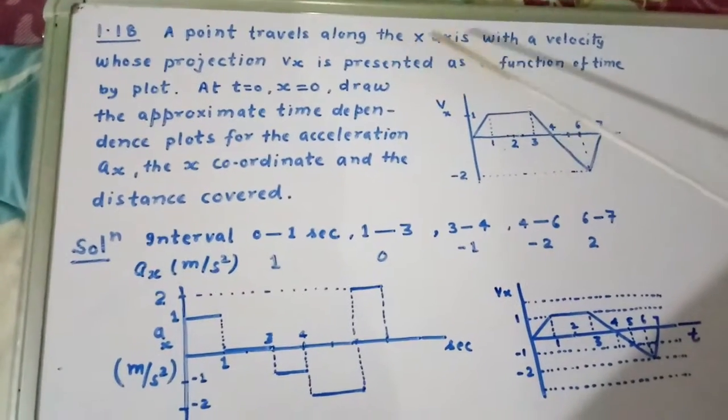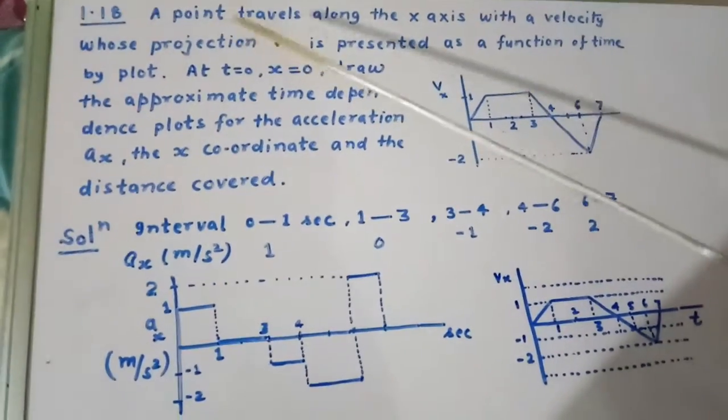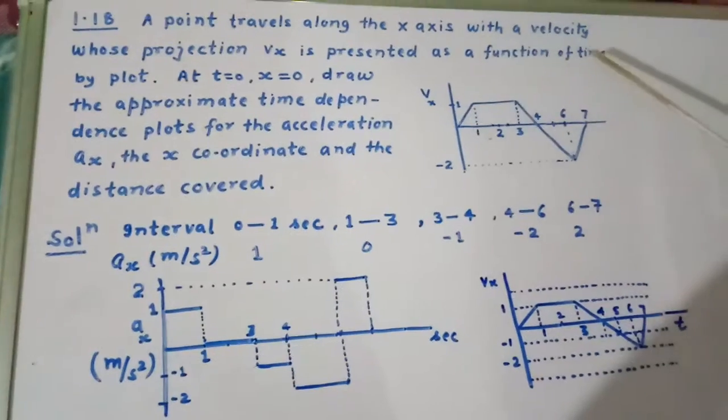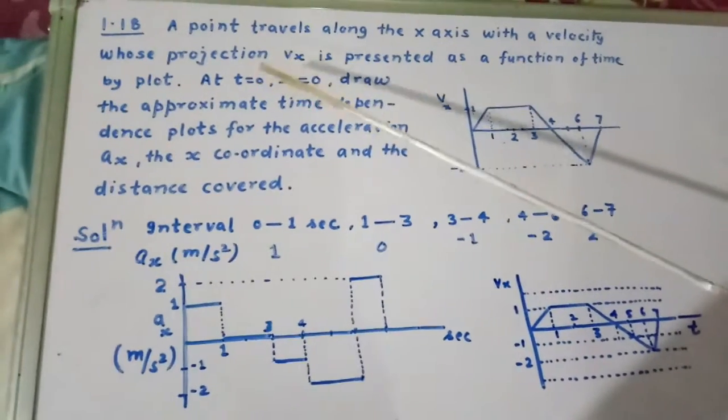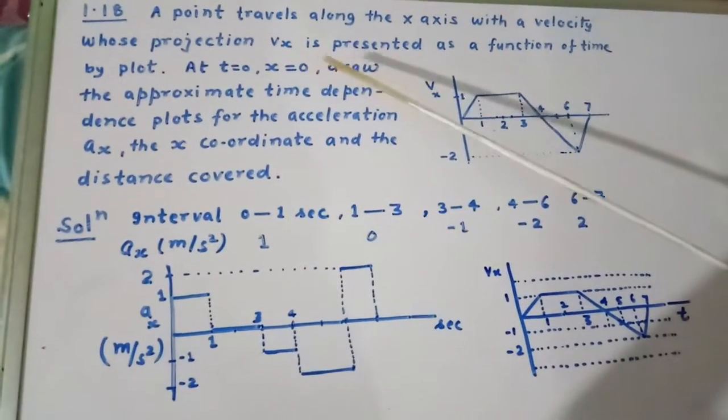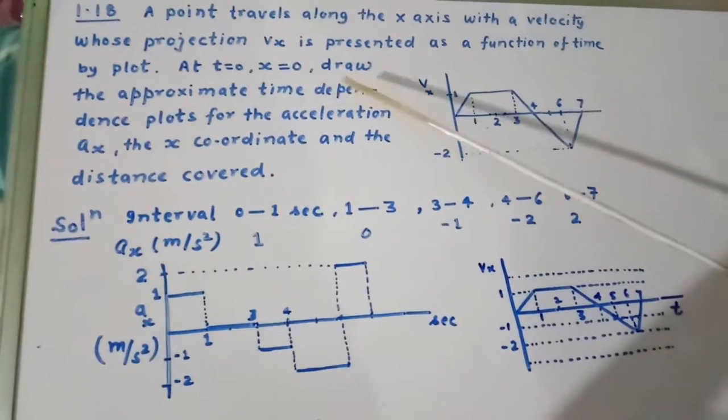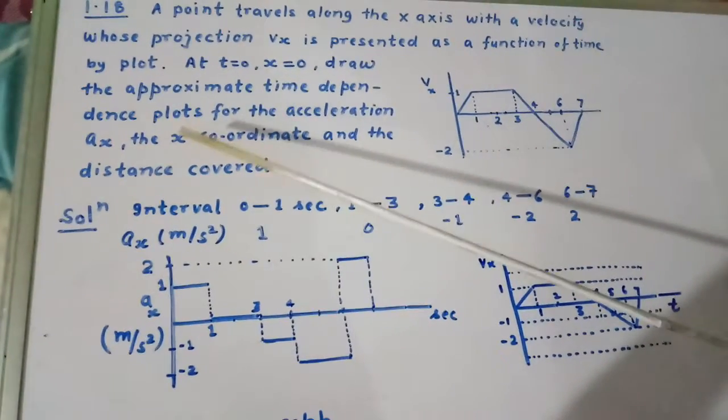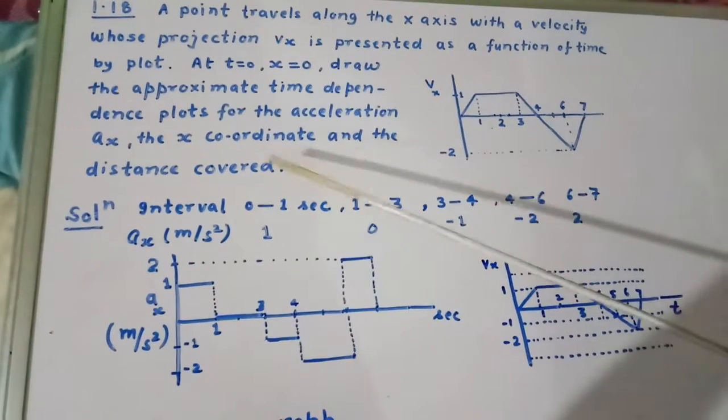A point travels along the x-axis with a velocity whose projection vx is presented as a function of time by plot. At t equal to 0, x equal to 0. Draw the approximate time dependence plot for the acceleration ax, the x-coordinate and the distance covered.